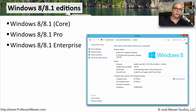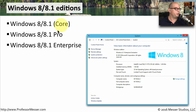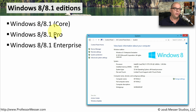With Windows Vista and Windows 7, there were many different editions of the operating system. But with Windows 8, we now only have to know about three different editions: the Core edition, which is usually just written as Windows 8 or 8.1; Windows 8 Pro; and Windows 8 Enterprise.